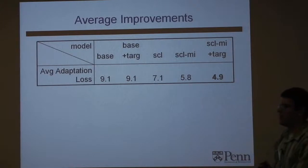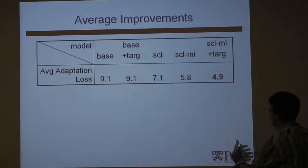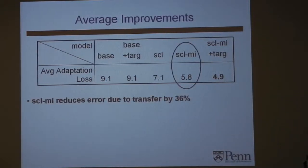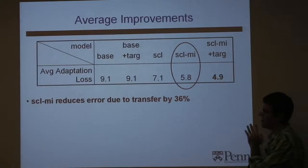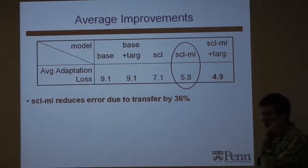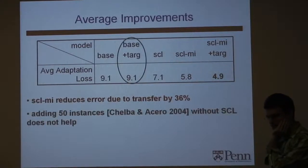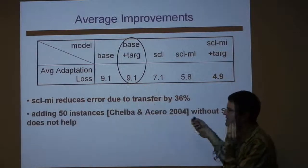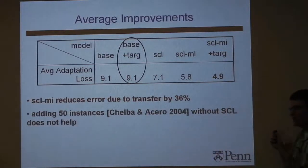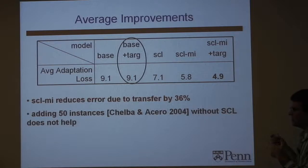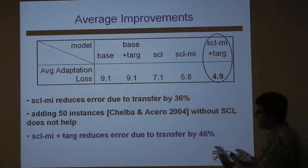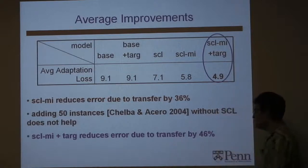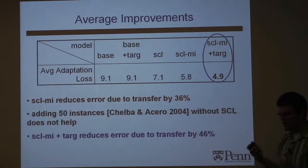To distill the results: even without any unlabeled data, we reduce error due to transfer by 36%. If you have just 50 instances and use the high-dimensional technique, basically it doesn't work at all — 50 instances just isn't enough to help with such a high-dimensional weight vector of hundreds of thousands or millions of features. But if you have a good low-dimensional representation, you can further improve to a 46% relative reduction in error.